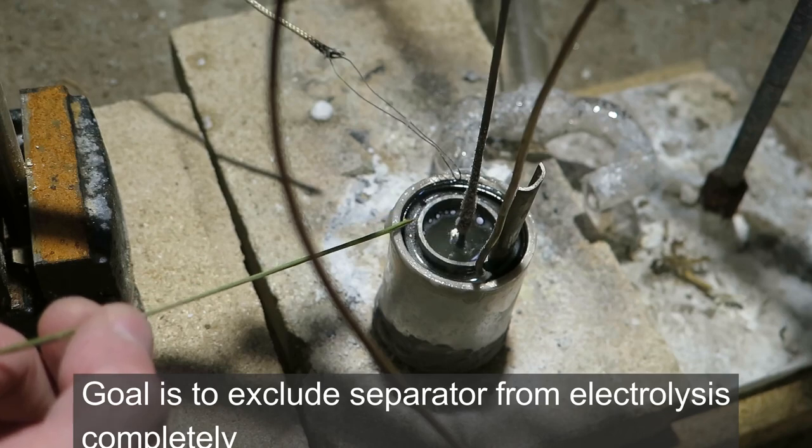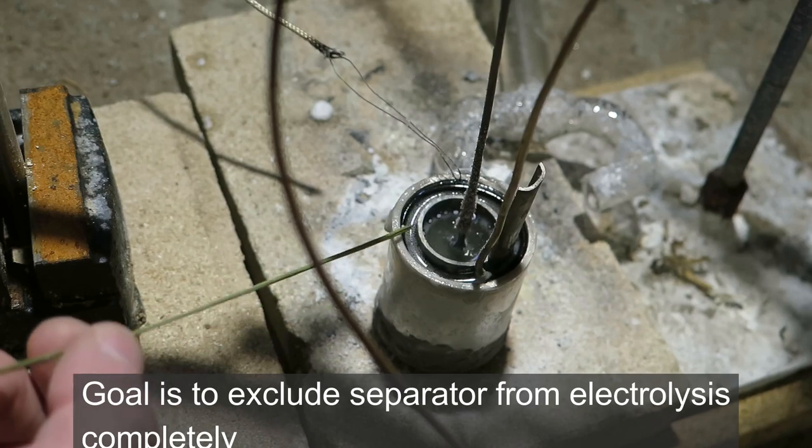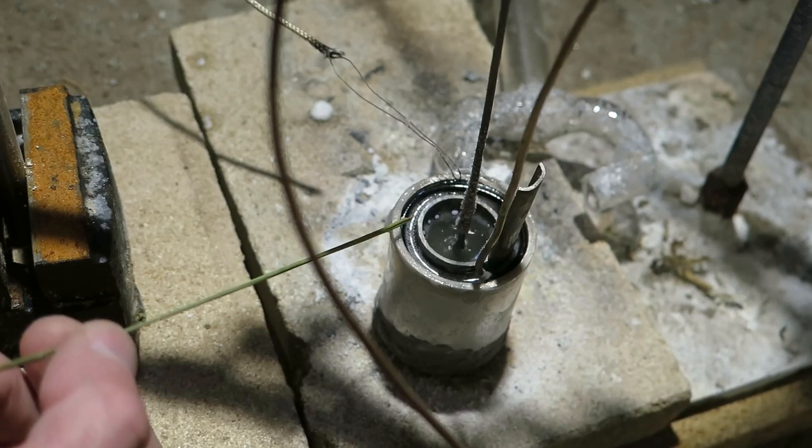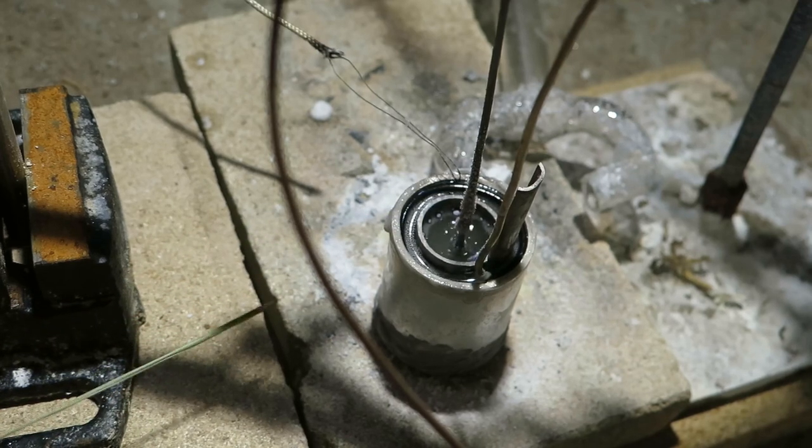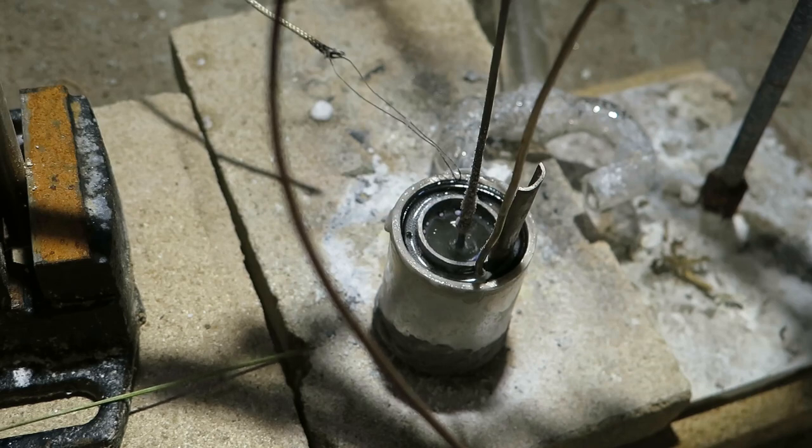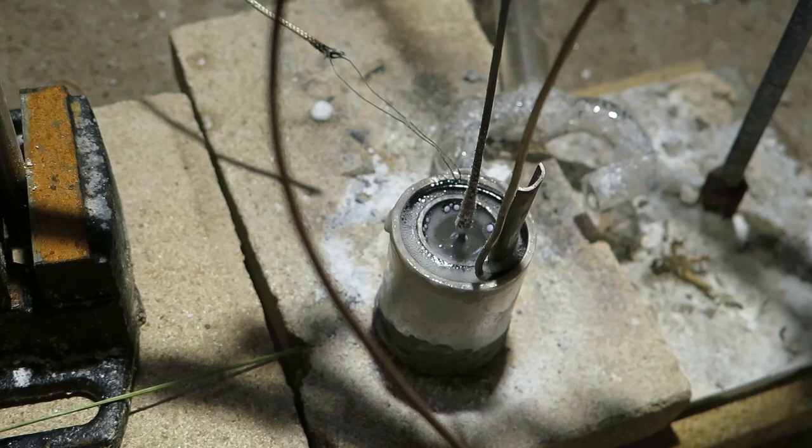Well, anyway, you can see bubbling in the outer shell of the aluminum. So that's what I'm looking for basically, and that seems to work. Now the temperature is dropping, so let's increase current significantly. Okay, here we go—20 amps.